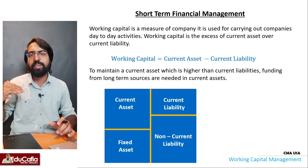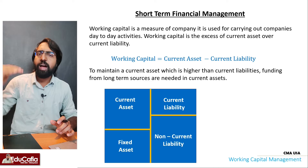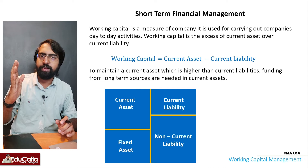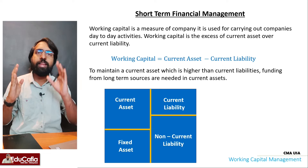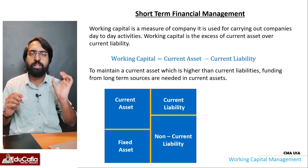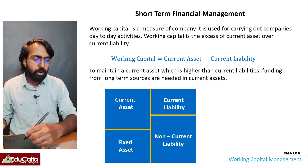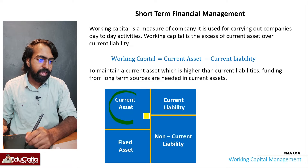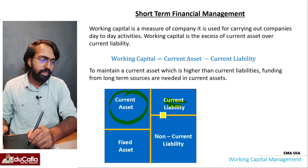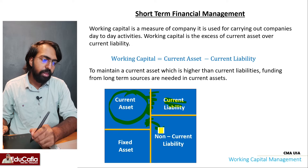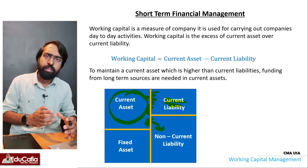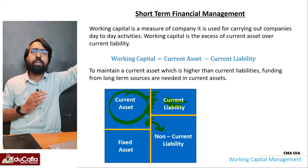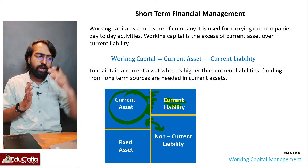We have asset items like buildings and machines. On the liability side, this is the source. We don't have only current liabilities — we also have non-current liabilities. Fixed liabilities include long-term loans. We have non-current liabilities such as the long-term loan.